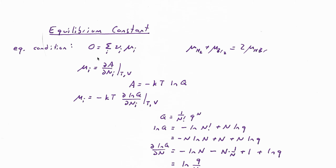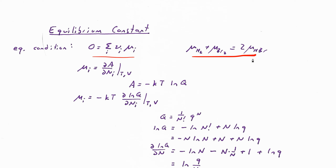What's certainly still true for a system that's at equilibrium is this equilibrium condition: the stoichiometric coefficients times the chemical potentials have to add up to zero. For the reaction we've been talking about, the chemical potentials of the reactants H2 and Br2 have to add up to the same thing as the chemical potential of the products — two molecules of HBr.